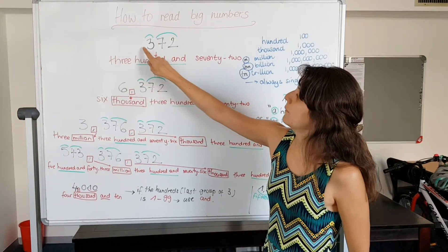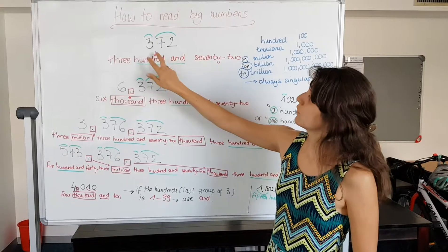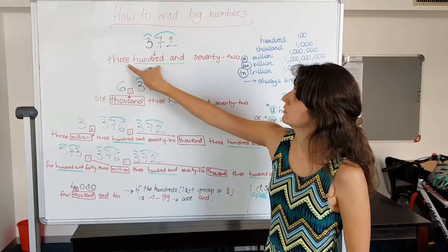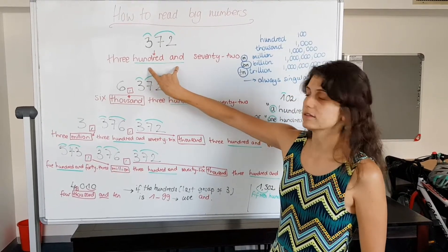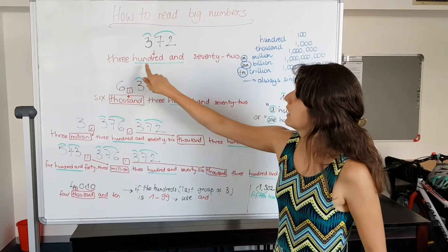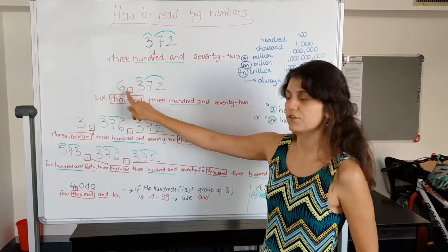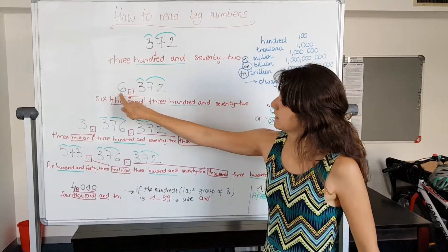So, three hundred and seventy-two. Three hundred and seventy-two. Three hundred and, three hundred and. Remember, together, like hundred and. Three hundred and seventy-two. Now if I move on to four digits, six thousand.